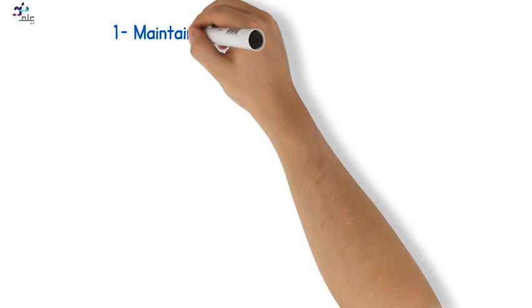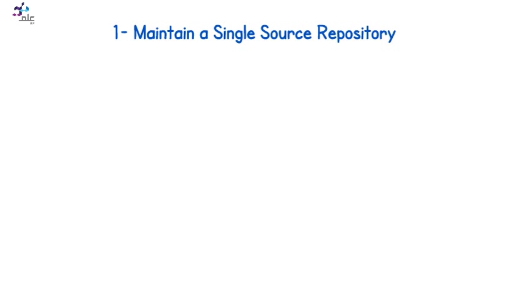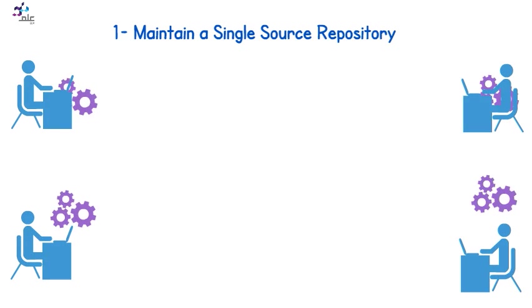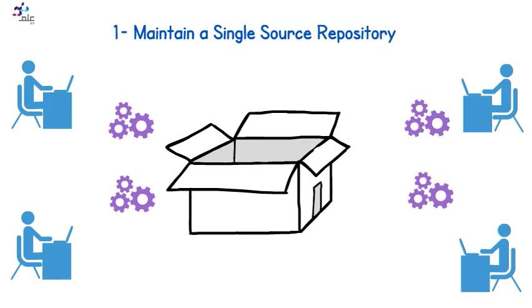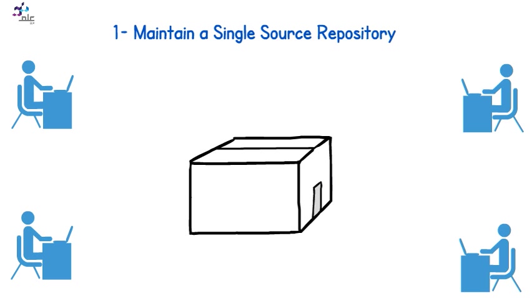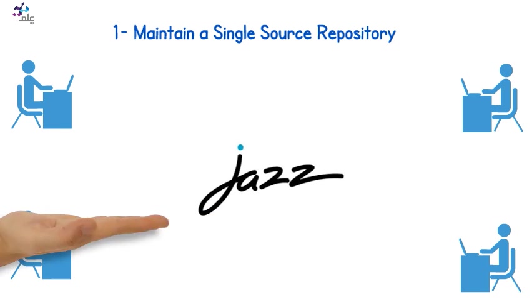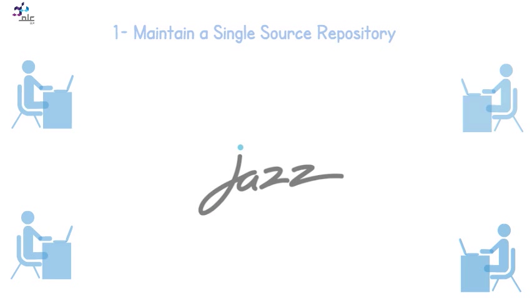1. Maintain a single source repository. As a simple basis, everything should be maintained in a source repository and it must be accessible from the IDE. In Elm, we have unified the IBM Rational Team Concert, widely known as JAZZ.